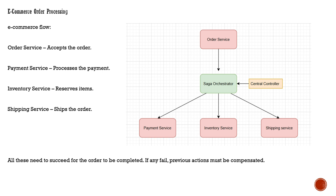If there is any failure in between — for example, the payment service completes but the inventory service fails — then the payment service also has to roll back and the whole transaction will be rolled back. A compensating transaction will be issued for it. This is shown diagrammatically in how the actions are performed.